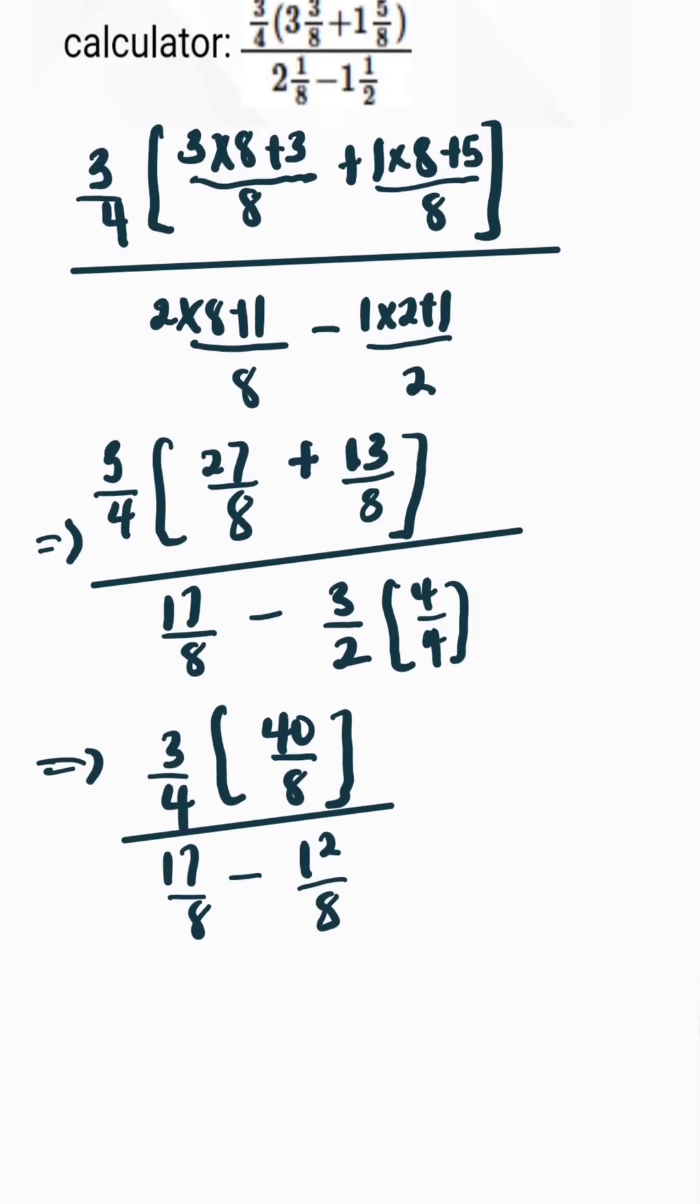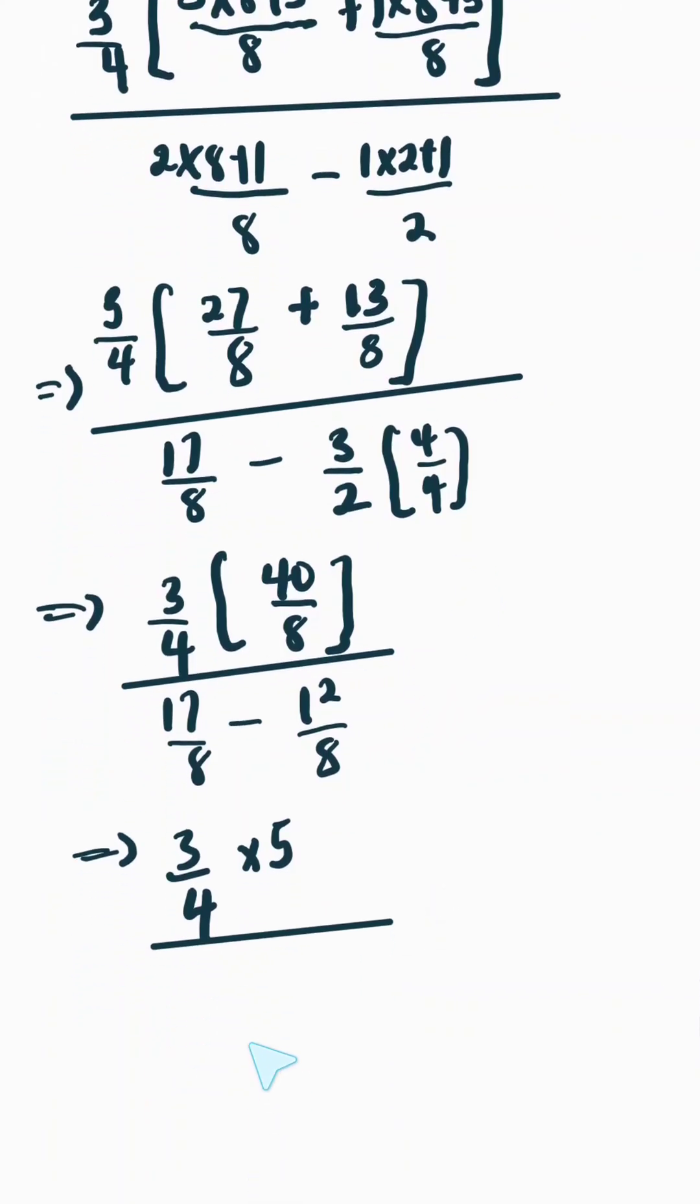Now here we have 3 over 4, 40 over 8 gives 5 divided by 17 minus 12 which is the same thing as 5 over 8.